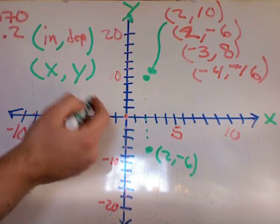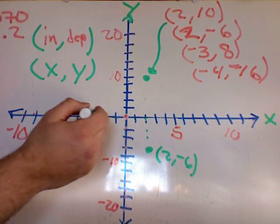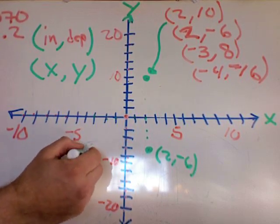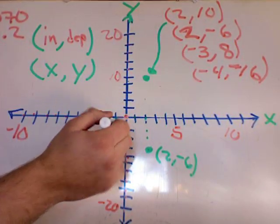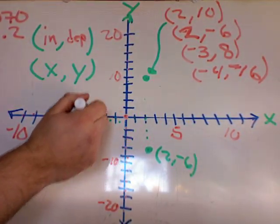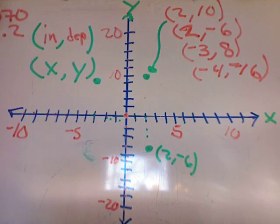So the next point is (-3, 8). I go one, two, three, negative three, eight. Make my point. Oh sorry, went the wrong way. One, two, three, comma, eight. See? Even I can make mistakes.